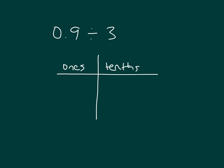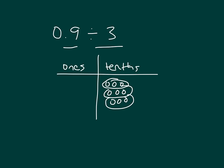Here we're asked to divide 9 tenths by 3. We'll model 9 tenths in our place value chart and then divide that into 3 equal groups. How many tenths are in each group? There are 3 tenths in each group. Therefore, 9 tenths divided by 3 equals 3 tenths.